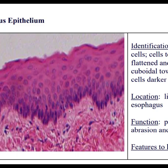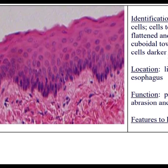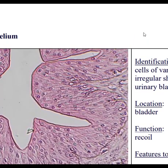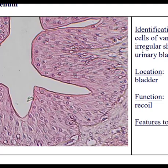Protection from abrasion and infection is the function of stratified squamous epithelium — the layers and layers lining your mouth, esophagus, and other places. The true squamous epithelium cells are the nuclei visible right there, because squamous means squished flat.